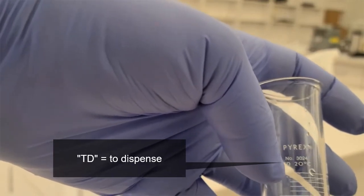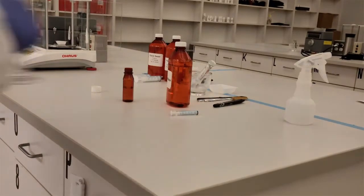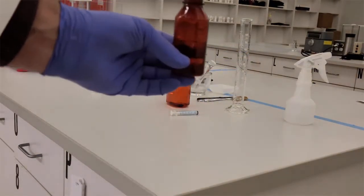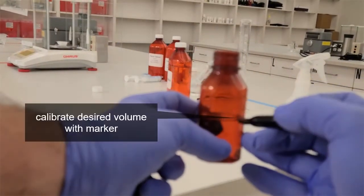Well, this says TD on it, which means to dispense. So those little amounts of water are part of the calibration of the graduated cylinder. So I know I dispensed 35 mLs, and it accounts for that water.